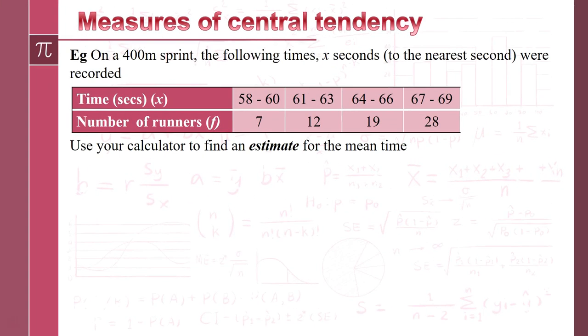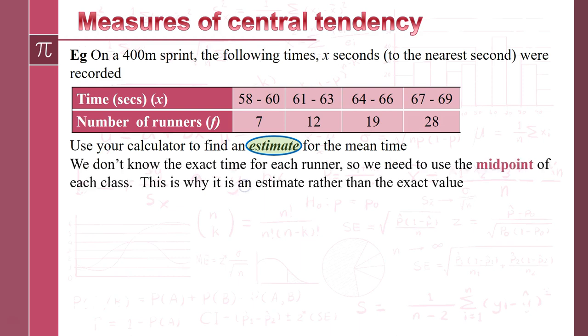Okay, on we go. So here we go, we've got another grouped example. This time we've got times to the nearest second of runners in the 400 meters. And first thing it says is calculate an estimate. Now it's saying estimate very deliberately because we know from the table, for example here we've got seven runners that ran somewhere between 58 and 60 seconds, but we don't know exactly how fast they ran. So that's why it's going to be an estimate. They could have run 58 seconds, they could run 60, but what we're going to do is assume, hopefully you're aware, that we assume that they're going to run 59. So we're going to use the midpoint for each one.